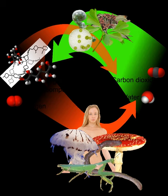When autotrophs are eaten by heterotrophs — i.e., consumers such as animals — the carbohydrates, fats, and proteins contained in them become energy sources for the heterotrophs. Proteins can be made using nitrates, sulfates, and phosphates in the soil.